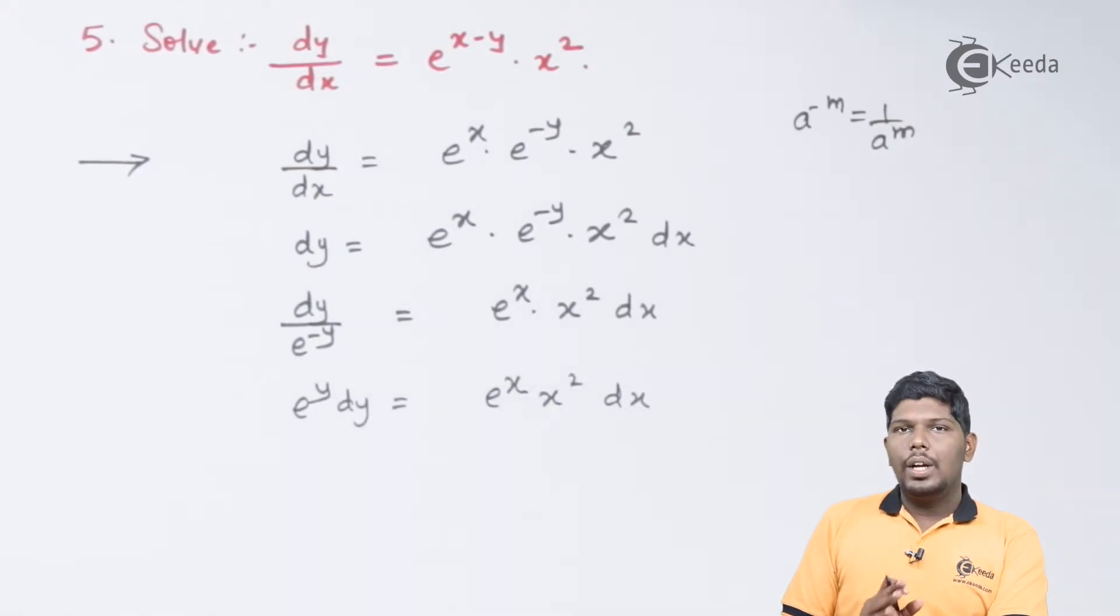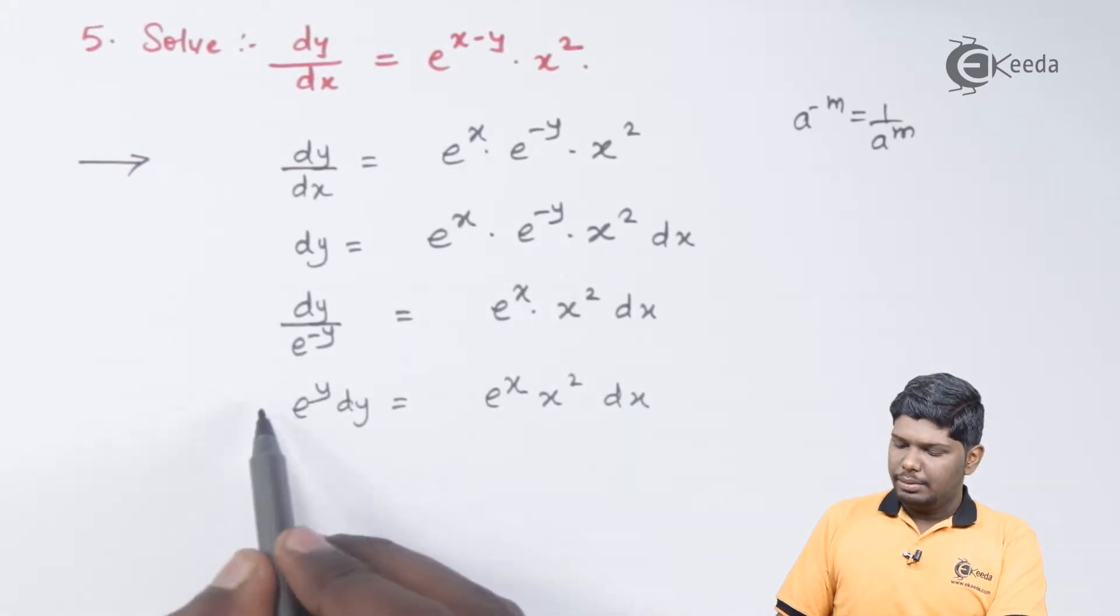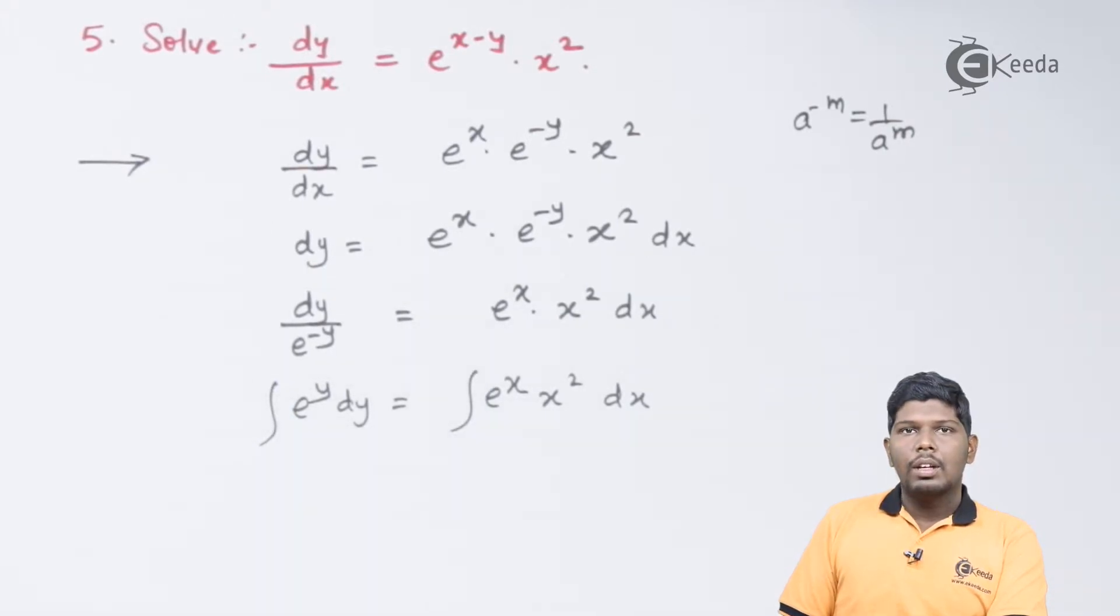Once the variables are separated, we can integrate on both the sides. On the right hand side, you can see we have product of two functions and whenever we have product of two functions, we will go for u-v rule. For that, we need to check which function belongs to which category.